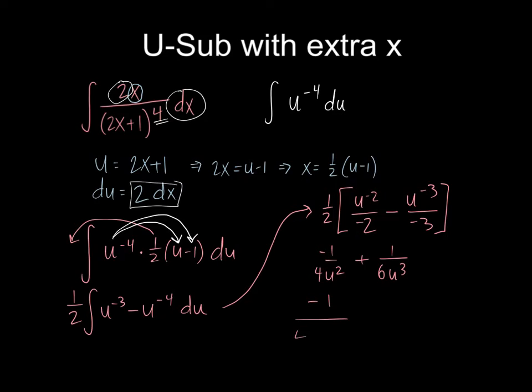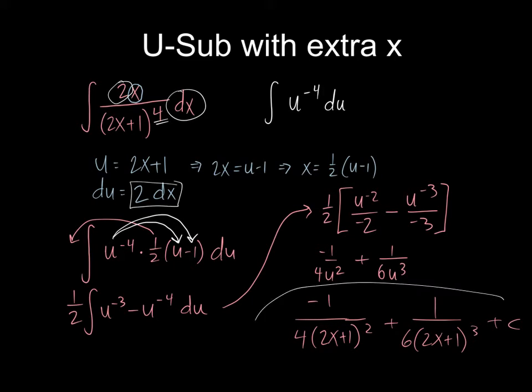So just simply put u back in place, negative one over four times whatever u was, which was two x plus one quantity squared, plus one over six, two x plus one quantity cubed, and plus c. So there's the first one. And let's do one more.